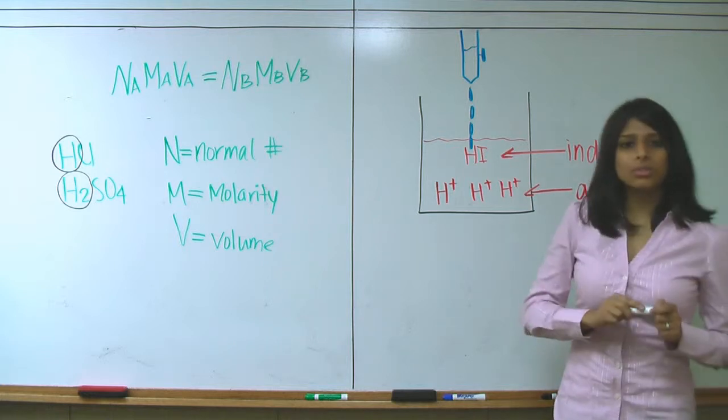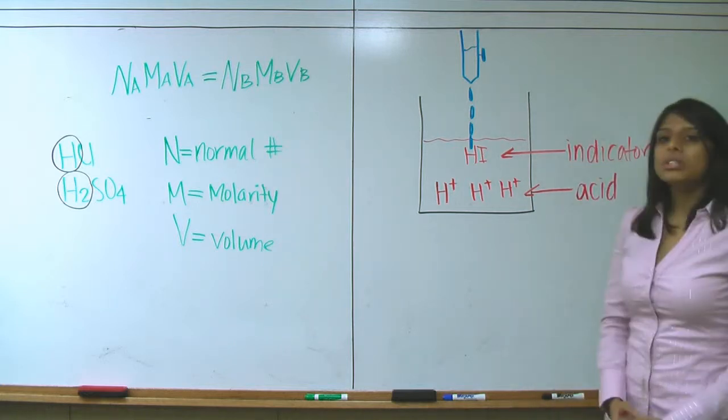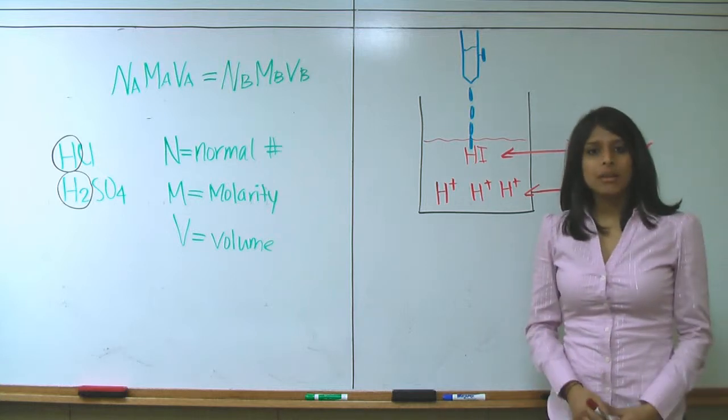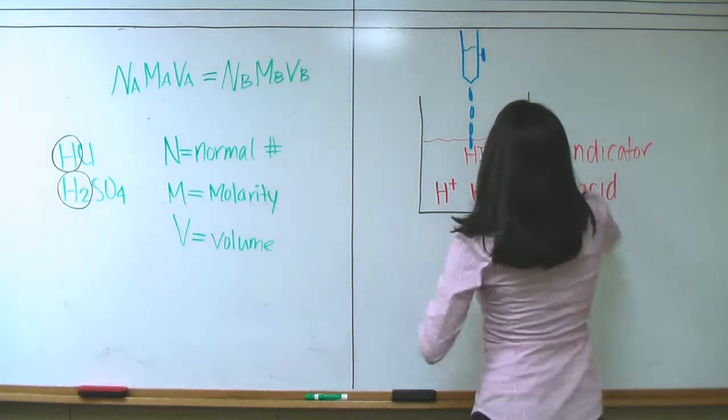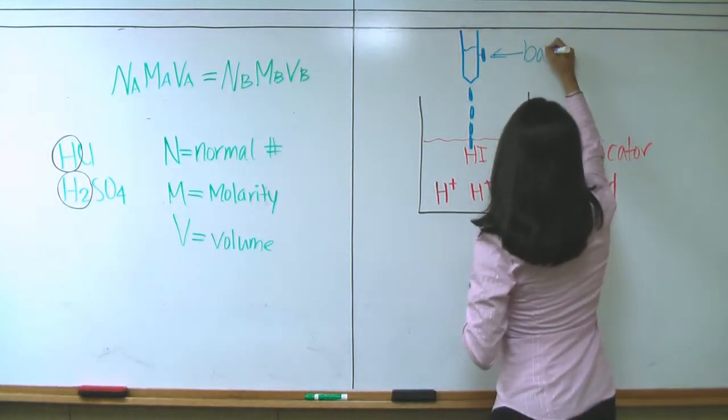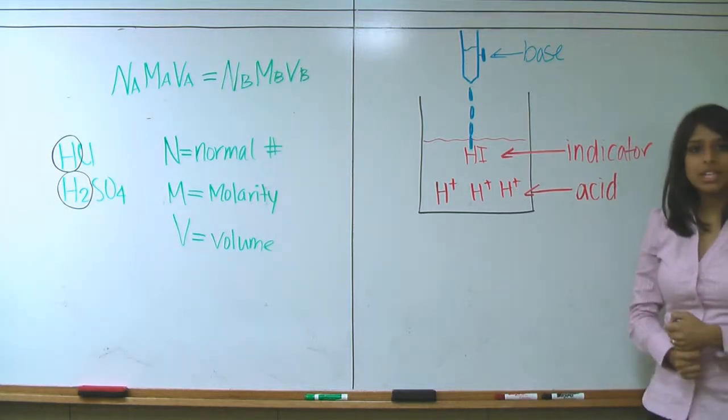A commonly used indicator in many labs is known as phenylphthalein. We take a burette filled with base and combine it with our beaker full of acid and indicator.